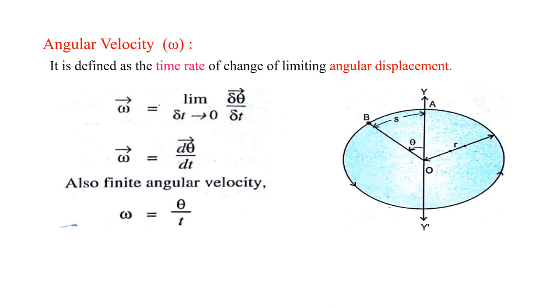So this equation can be rewritten as omega is equal to d theta by dt. So finally we will get omega is nothing but angular displacement with respect to time, and the SI unit of angular displacement is radian per second.